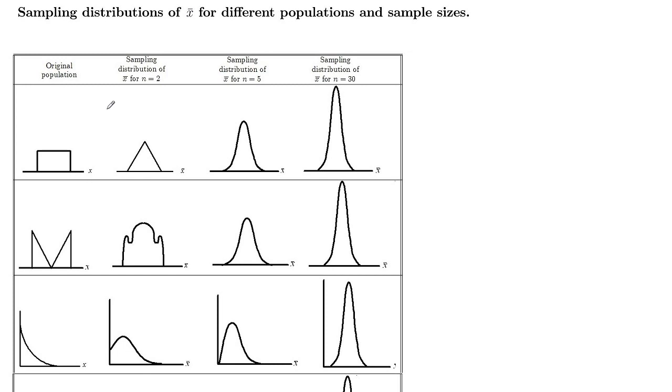And we started with an original population. Well, we did one where the original population was normal here. So in this column of the table we've got the original population, and then this is showing the sampling distribution for samples of size 2, samples of size 5, and samples of size 30.